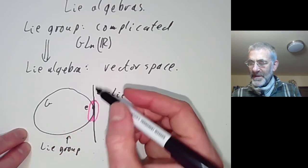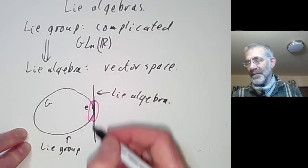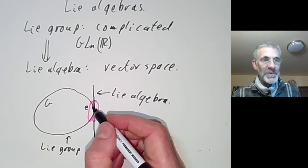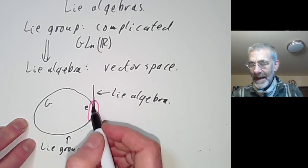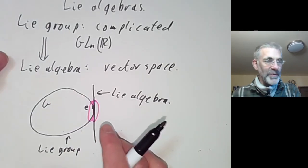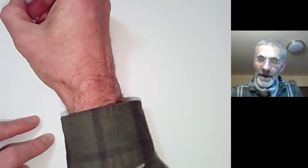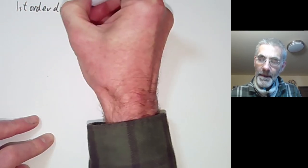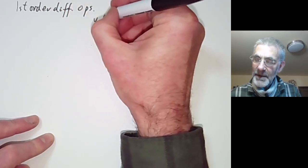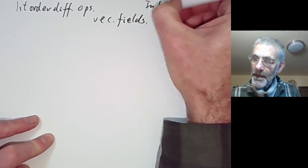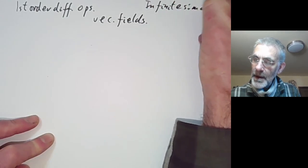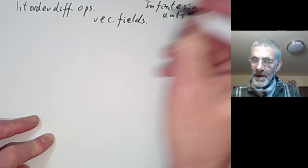The problem is we can always take the tangent vector space of a Lie group, but this doesn't tell us anything very interesting — it's just a vector space. We want to put some structure on the Lie algebra to capture most of the structure of the Lie group. To do this, let's first recall the connection between first-order differential operators, vector fields, and infinitesimal automorphisms of a manifold.